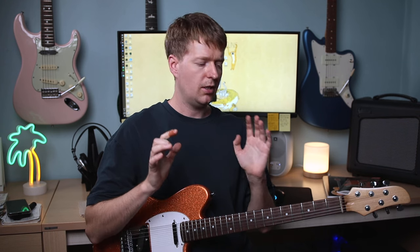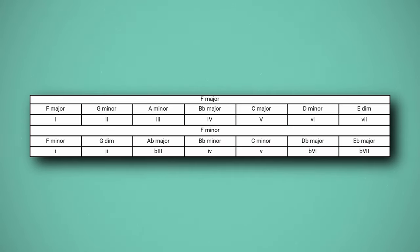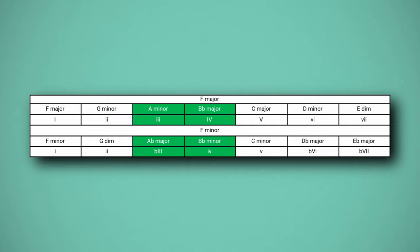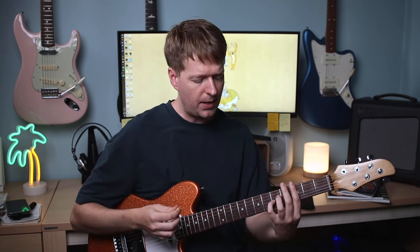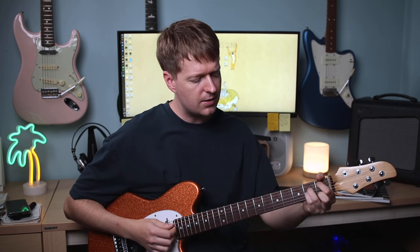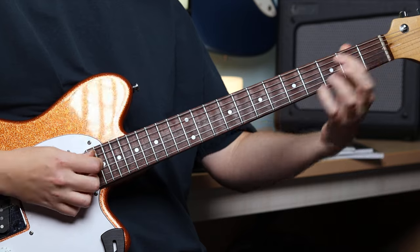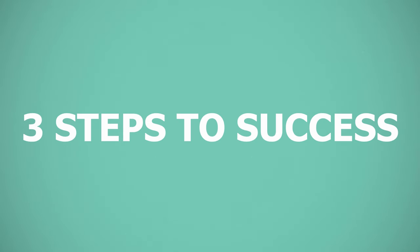Basically, we look at the key of our song — in this case we're in the key of F major — and we work out what the parallel minor key is, in this case F minor. We use the chords from that to change between the two keys. This sounds really cool, breaks up the repetitiveness of an idea, and grabs our listeners' ears at the same time. For our chord progression, instead of playing the A minor chord, I borrowed the chord from the parallel minor to play an A flat major chord instead. And instead of playing the B flat major chord, I replaced it with the minor four chord.